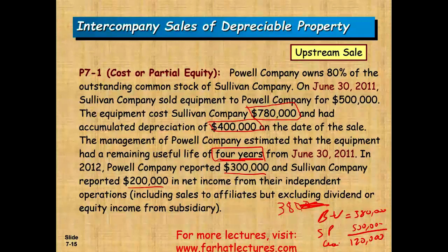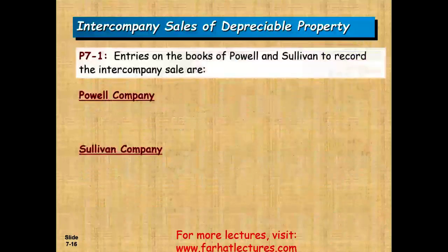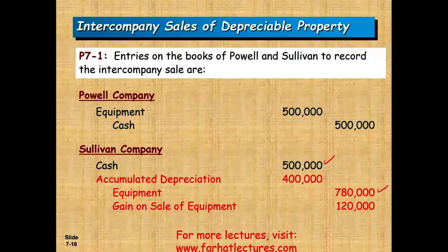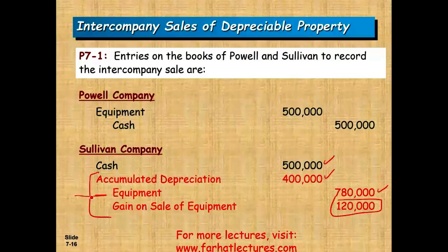We record the transaction on the books of both companies. P Company paid $500,000: debit equipment $500,000, credit cash $500,000. Sullivan Company sold the asset: debit cash $500,000, credit equipment $780,000 removed, debit accumulated depreciation $400,000, and credit gain on sale $120,000. The three highlighted entries — restoring equipment to $780,000, restoring accumulated depreciation to $400,000, and removing the $120,000 gain — are what we must address year after year in the consolidation.